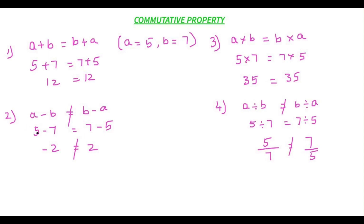So commutative property holds good only for addition and multiplication; it does not hold good for subtraction and division. I hope you understood commutative property in detail and found this method easy to understand. If you found this video interesting, click the subscribe button, hit the bell icon for regular updates, and don't forget to click the like button. Thank you for watching.